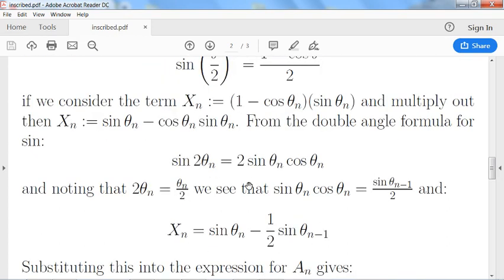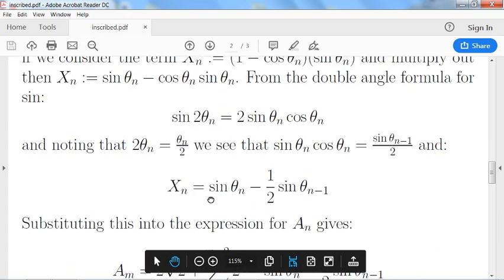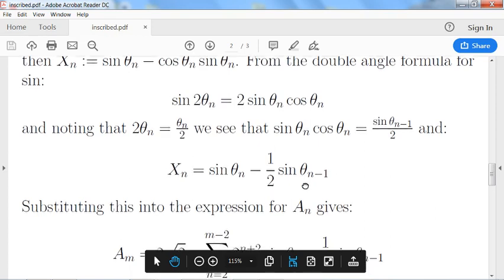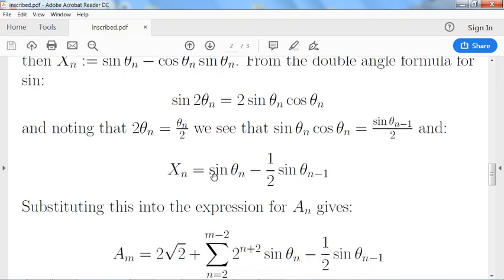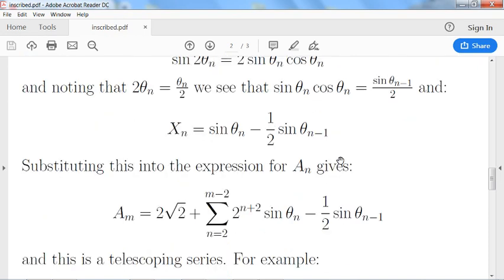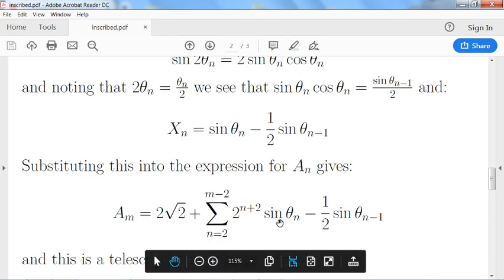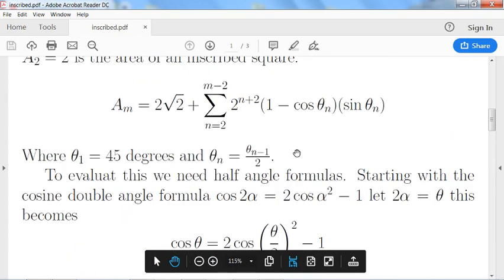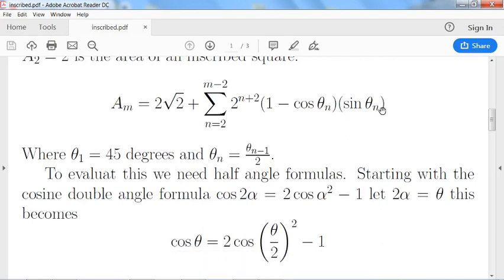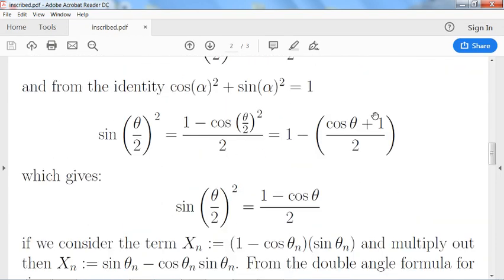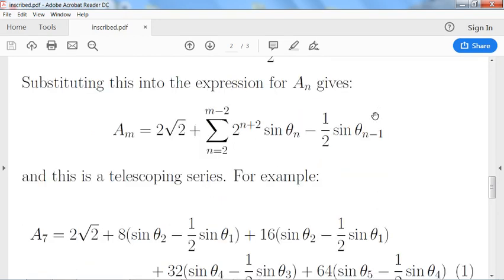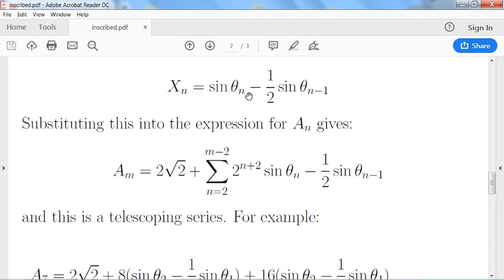And so when we substitute that in then we get another formula instead of the original. We have this sine θ_n minus a half sine θ_n minus 1. Now this is a recursive formula, but when we substitute this back into the expression for A, so now instead of using this one minus cos θ_n sine θ_n, after the rearranging we've rewritten it as sine θ minus a half sine θ_n minus 1.